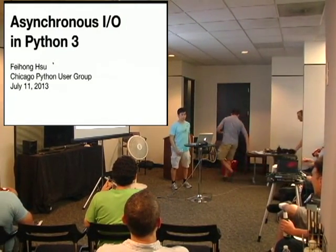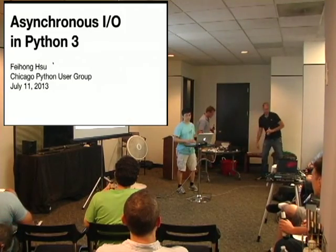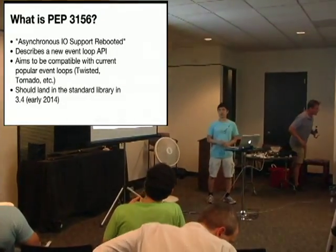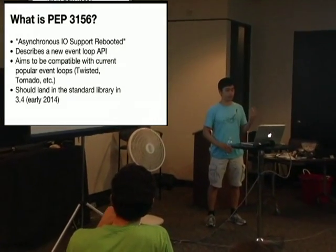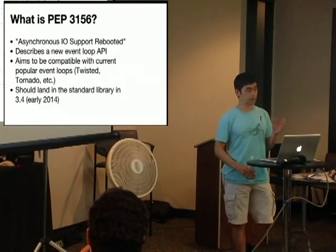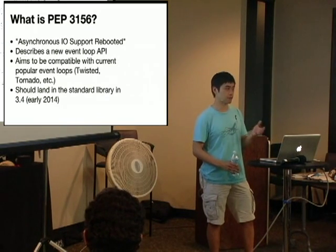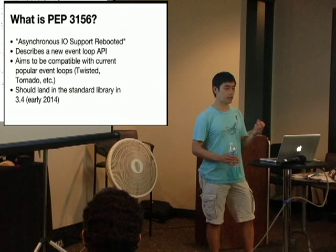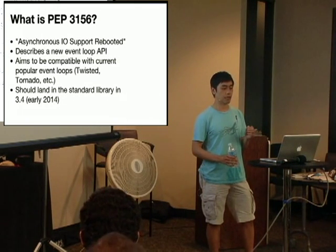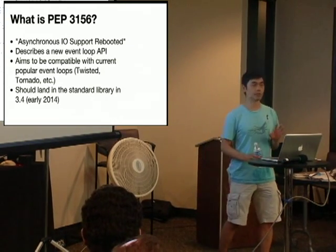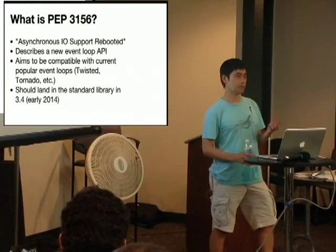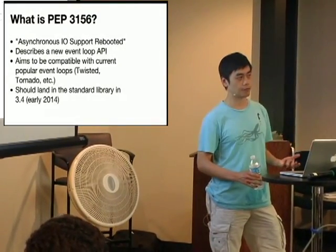Hey everyone, I'm Feihan Xu. We're going to talk about asynchronous IO in Python 3. This talk basically begins with a PEP called 3156, officially titled 'Asynchronous IO Support Rebooted.' It describes a new event loop implementation, and one of its goals is that it be compatible with current existing event loops—primarily Twisted, but also Tornado, et cetera. Right now it's slated to land in Python 3.4, not the current version 3.3, probably early 2014, hopefully in time for the Montreal PyCon.